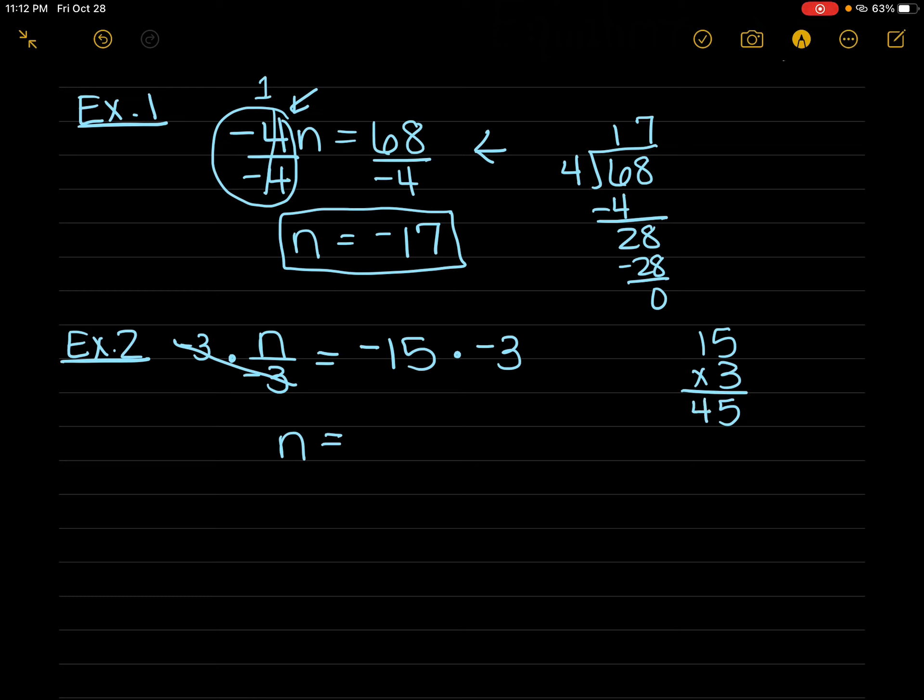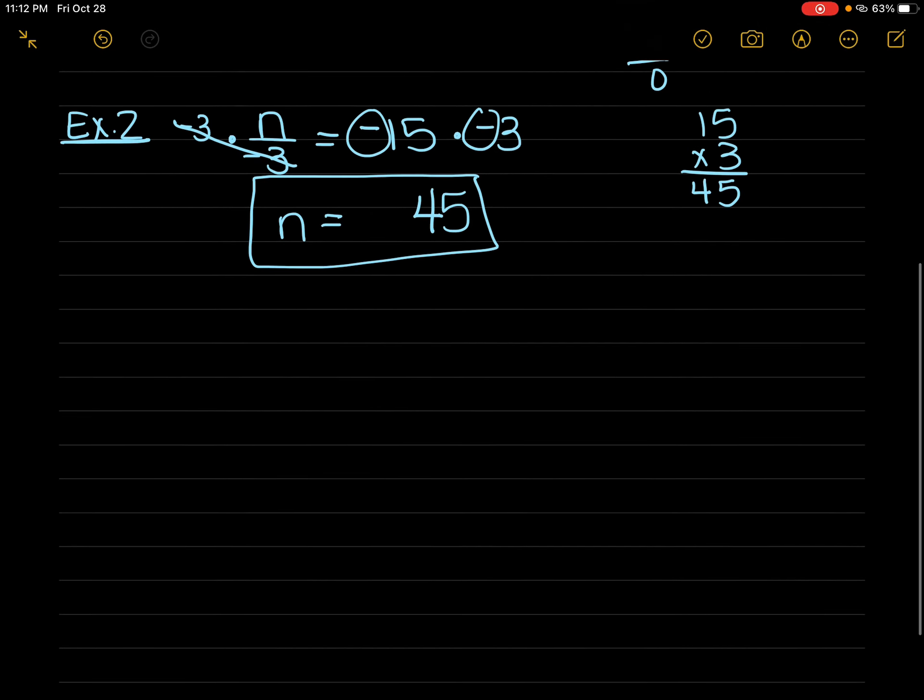Or, if you know what 15 times 3 is, 45, then you just write it here. Now I look at my signs. I have both of them are negative. So if your signs are the same, your answer is positive. So there's my answer for example 2. It's n = positive 45.